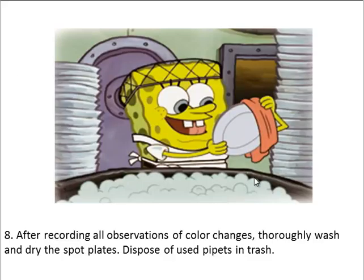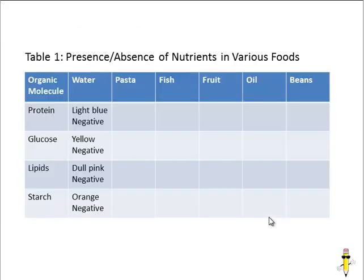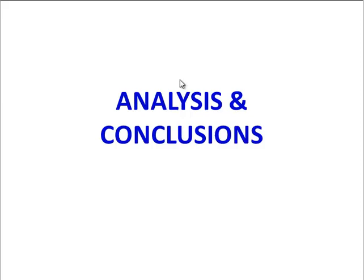For cleanup, make sure you wash and dry the spot plates very thoroughly — otherwise you'll contaminate the plates for the following classes. Any pipettes you use can be disposed of in the trash. Once that's done, it's time to analyze your results. Complete a data table with the different molecules in the columns and the different foods tested along the rows, recording both color change and whether the change indicates a negative or a positive test. For water, because it doesn't have any nutrients, we would expect a negative test in all four cases.